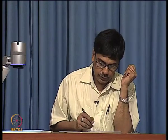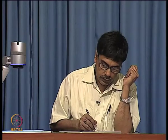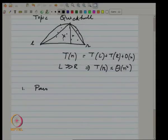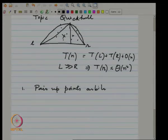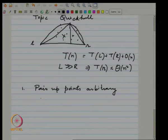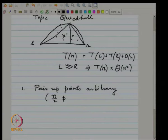The first thing you do is pair up points arbitrarily — not at random, but any way you want. If you start with n points, you will have about n/2 pairs. Let us say n is a power of 2, so n/2 pairs.